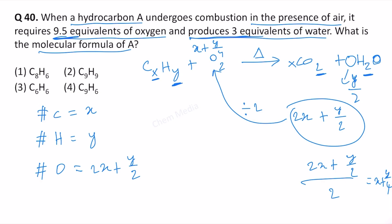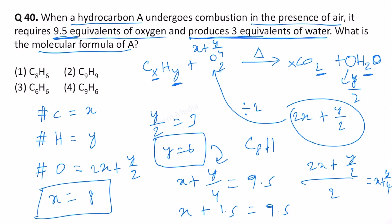In the question it is mentioned that it produces three equivalents of water, that means Y by 2 equal to 3, therefore Y equal to 6. If Y equal to 6, then X plus Y by 4 is equal to 9.5. If we substitute this one here, then that will become 6 by 4. 6 by 4 is 1.5, so X plus 1.5 is equal to 9.5, therefore X will be 8. This means C8H6 is the correct molecular formula. This means option 1 is correct.